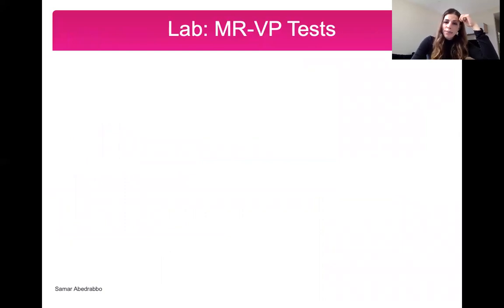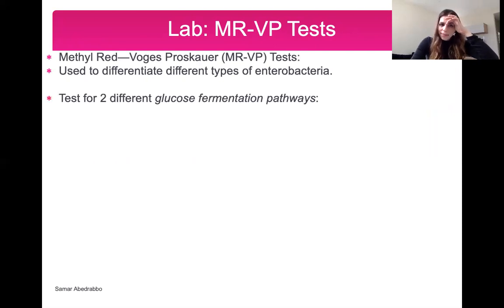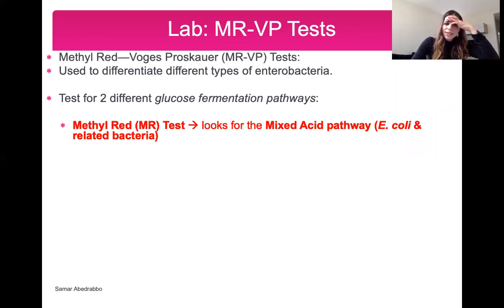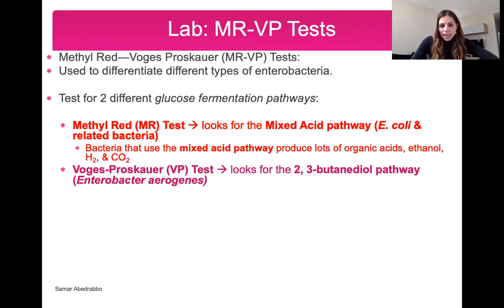The MRVP test (Methyl Red Voges-Proskauer) differentiates types of enterobacteria by testing two different glucose fermentation pathways. The MR pathway is used by E. coli, producing mixed acids including organic acids, ethanol, hydrogen gas, and CO2. The VP pathway (2,3-butanediol pathway) is used by other enterobacteria. Both tests use the same MRVP broth containing sugar, peptone, and a buffer, but different reagents are added afterward to detect each pathway.